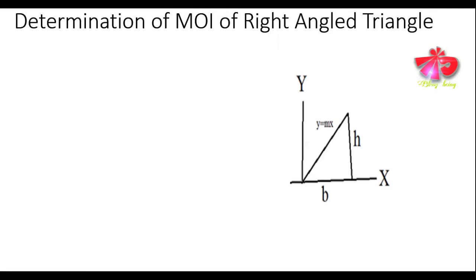Hello friends, we have come with yet another video on applied mechanics. Today we will determine the moment of inertia for a right angle triangle having base b and height h. We will determine the MOI of this right angle triangle — firstly about the base (x-axis and y-axis), and after that about the centroidal x and y axes of the figure.